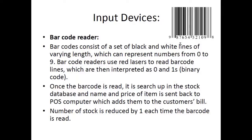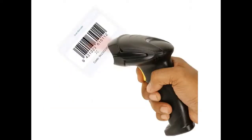Next, we have barcode readers. A barcode consists of a set of black and white lines of varying thickness which can represent numbers from 0 to 9. Barcode readers use red lasers to read the barcode lines, which are then interpreted as binary codes (0s and 1s). Once the barcode is read, it is looked up in the stock database, and the name, price, and other details of the item are sent back to the POS computer, which adds them to the customer bill. The number of stock items is reduced by one each time the barcode is read.